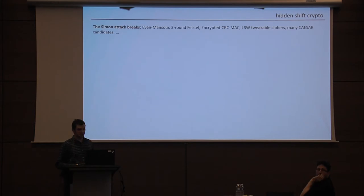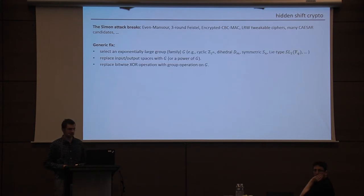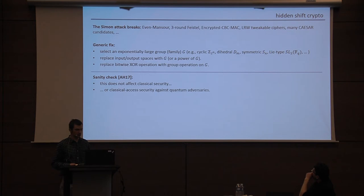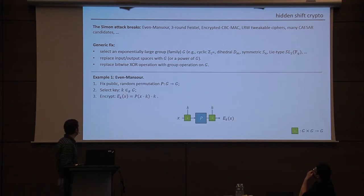So this suggests a natural fix for this problem with all these Simon attacks, which is to select some exponentially large group like cyclic groups or dihedral groups or matrix groups, your favorite group family, and to replace the input-output spaces in all of these different schemes with G, and replace the bitwise XOR operation with the group operation on G, and see if you can get away from this sort of special feature that Z mod 2 at the end has in the quantum world. So of course you should do a sanity check first to make sure this doesn't affect classical access security, and that all is fine. So I should say, certainly people have thought quite a bit in the past about block ciphers on other domains, so in a sense this is not a new idea, but let's see what happens.